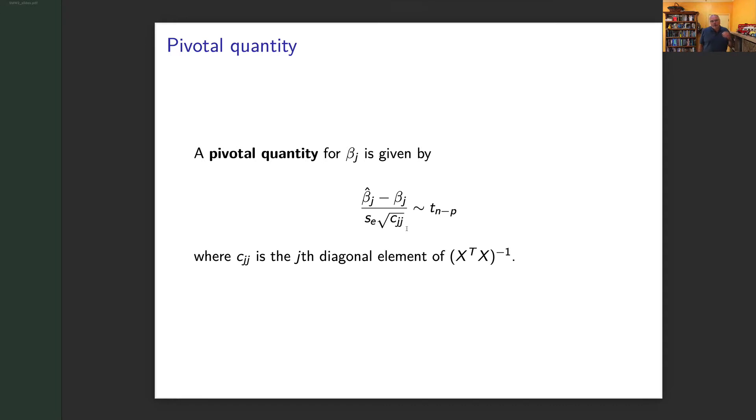The nice thing is we get what we call a pivotal quantity. What that means is we can get a random variable that we can use to ask questions about individual coefficients that we can get entirely from the data, but whose distribution does not depend on the parameter.